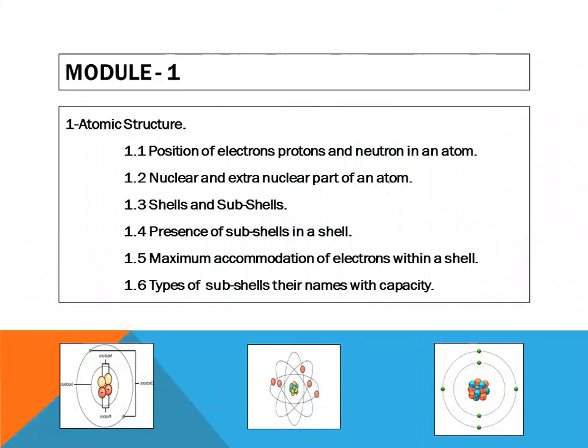In module number one, we are going to study about the atomic structure. In atomic structure, we will be discussing six steps. In step number one, we will be discussing about the position of electrons, protons, and neutrons in an atom.